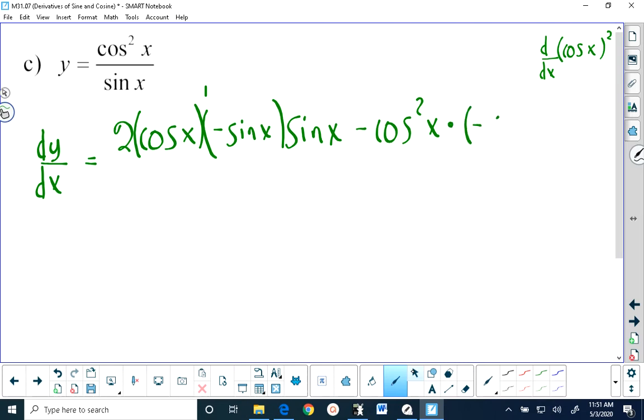At this point in time, I'm saying the derivative is negative cos of x. It should be clearly positive cos of x.